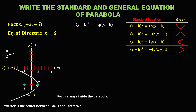Now we need to find the three values: k, p, and h. Since h and k come from the vertex of the parabola, the coordinate of the vertex gives us x equals positive 2 and y equals negative 5. So h equals 2 and k equals negative 5. To find p, p equals positive 4.